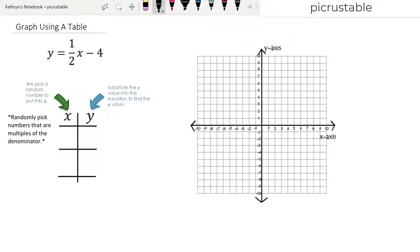We're going to graph using a table. We're going to graph the equation y equals 1 half x minus 4.